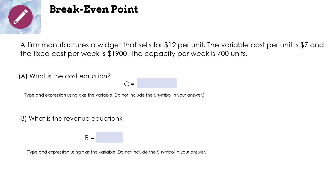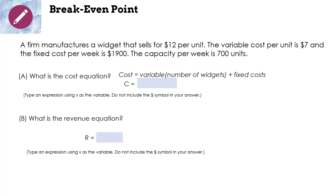Let's look at this one. A firm manufactures a widget that sells for $12 per unit. The variable cost per unit is $7, and the fixed cost per week is $1,900. The capacity per week is 700 units — meaning the most the manufacturer can make is 700 units. Part A: what is the cost equation? The cost equals the variable cost times the number of widgets plus the fixed costs: C = 7x + 1900.